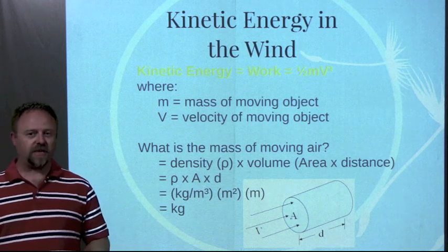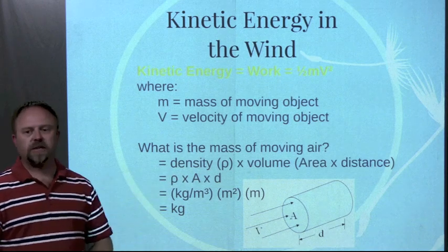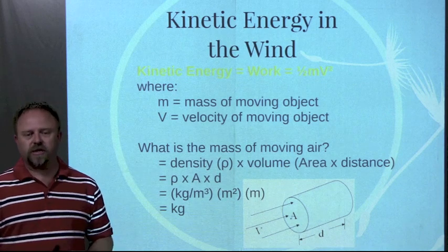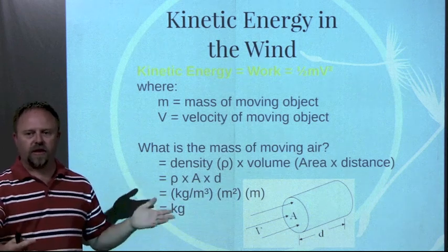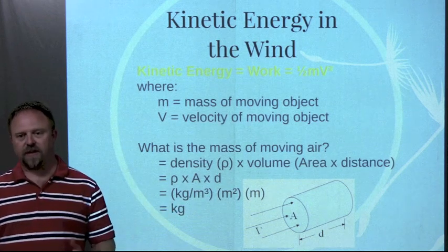If we're going to calculate the mass of the air, we need to know what the density of the air is. At different elevations you have different densities. And how much air is moving through the wind turbine. So we can find that by looking at the area of the wind turbine and a distance measurement. We can get kilograms out of that, which is mass.